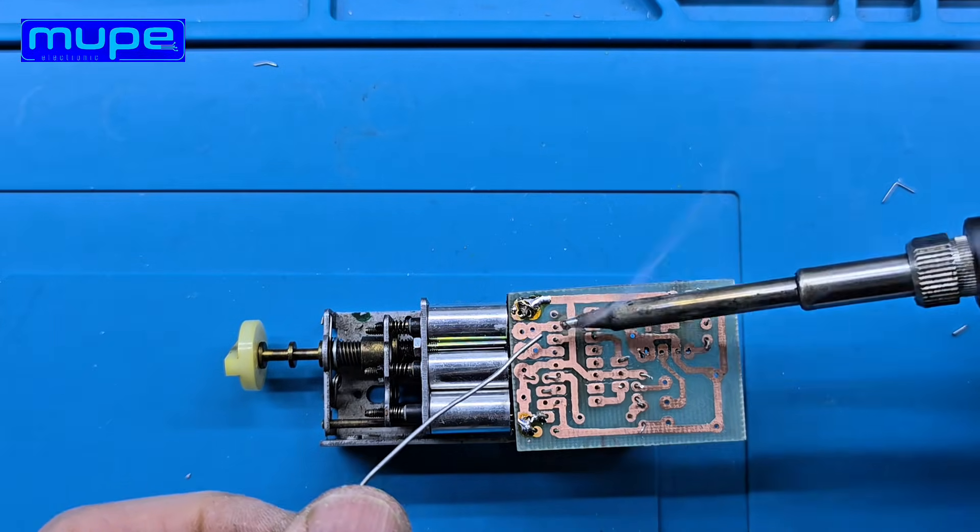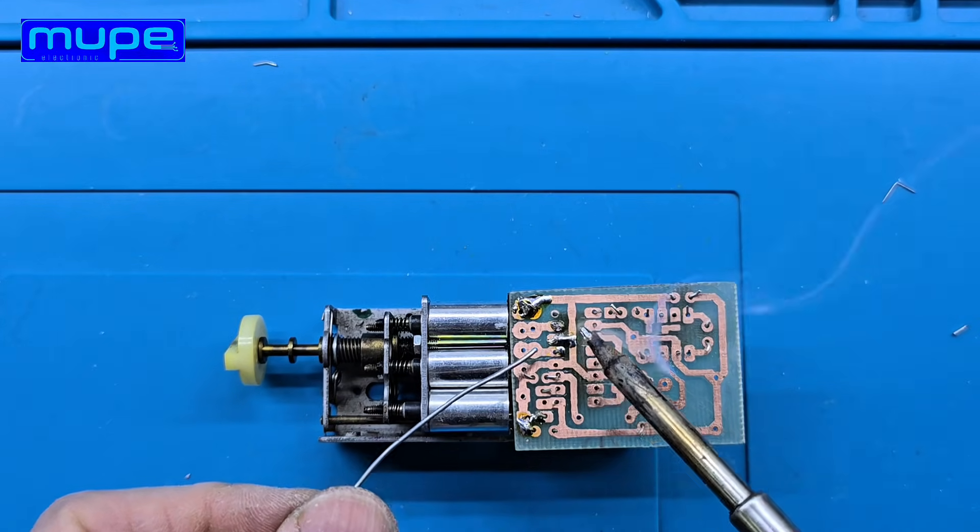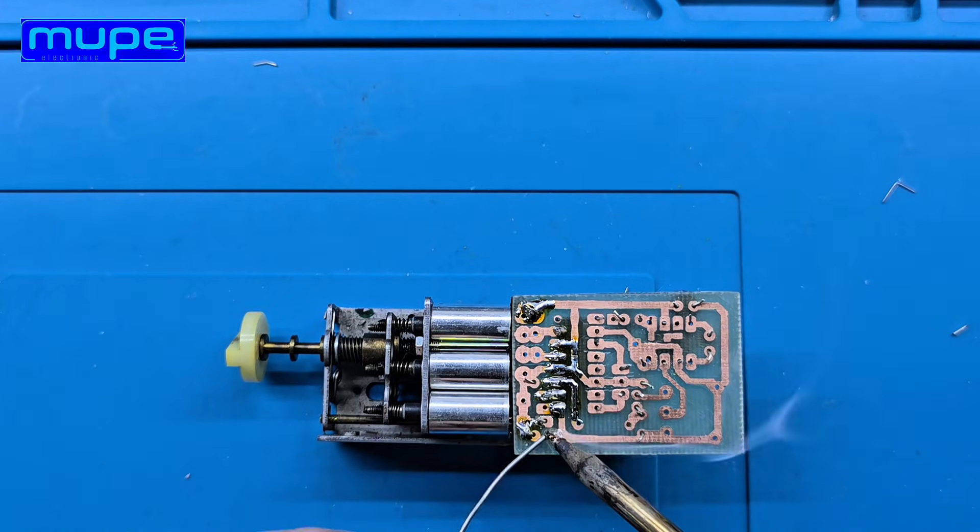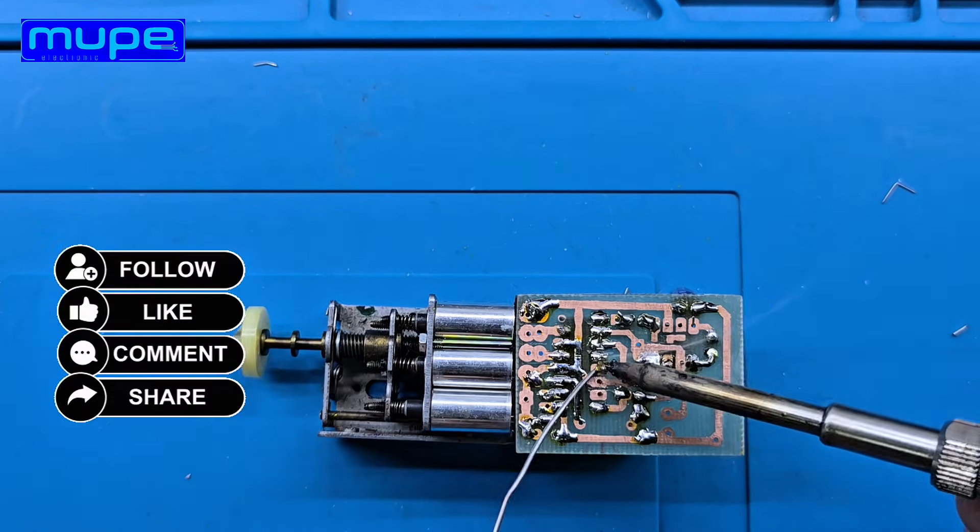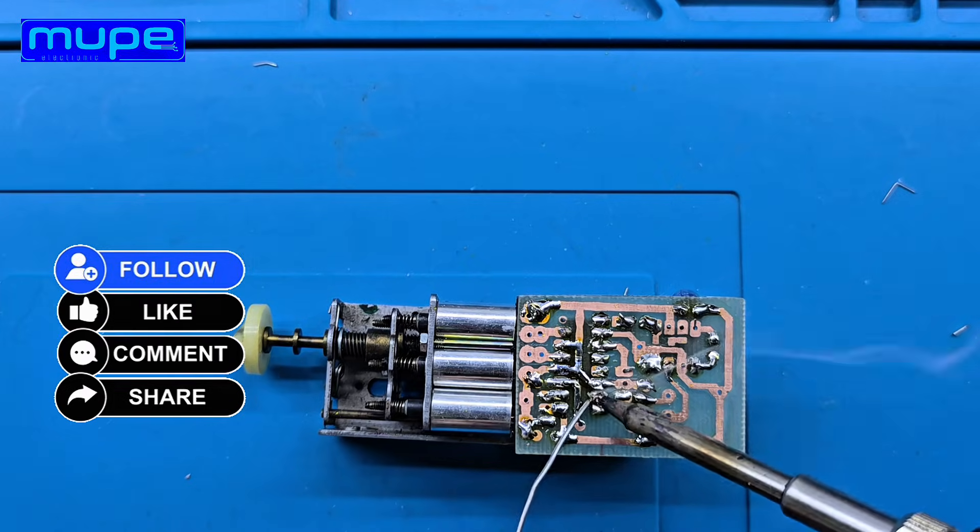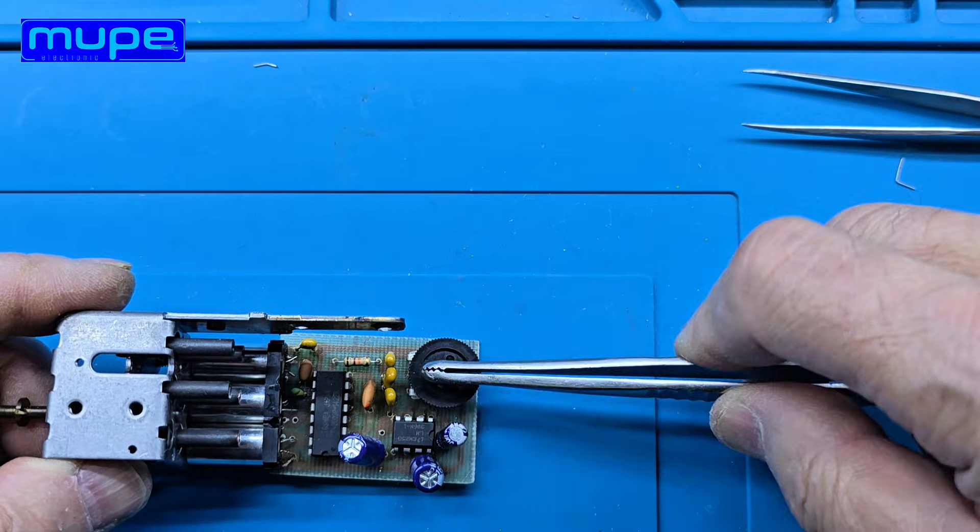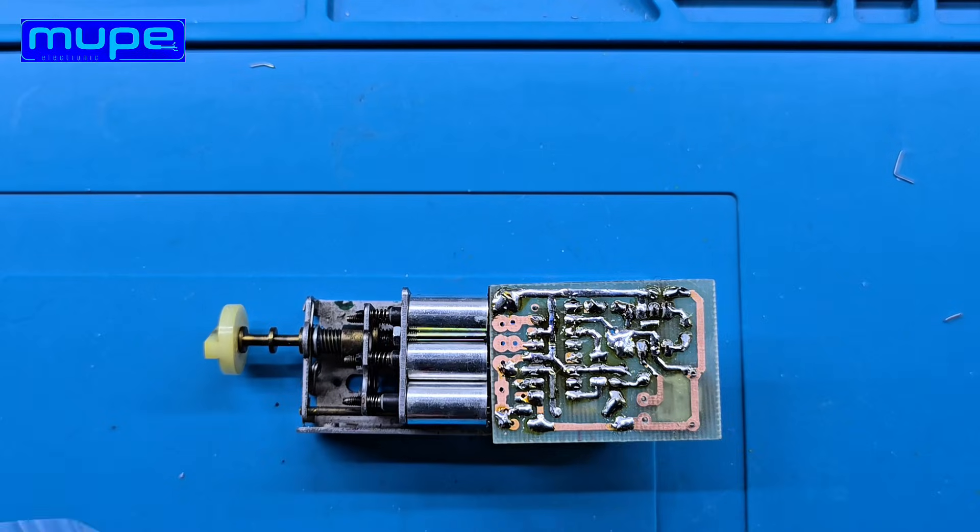After placing the components, I trim the excess leads to keep the board clean. Then I solder each joint with a solid, shiny connection. Clean cuts and good soldering make the circuit reliable.